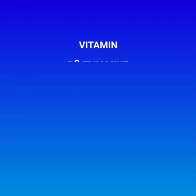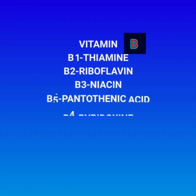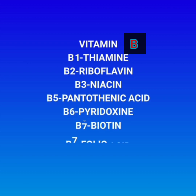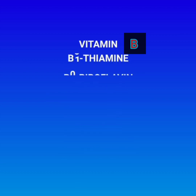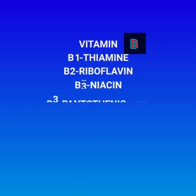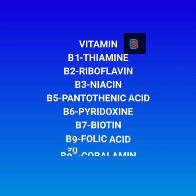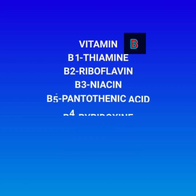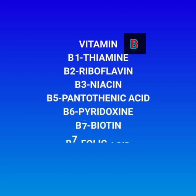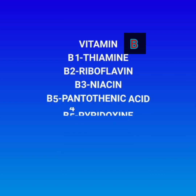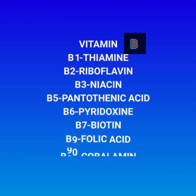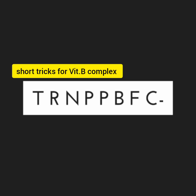The names of the B complex groups are: vitamin B1 is called thiamine or aneurine, B2 is riboflavin, B3 is niacin, B5 is pantothenic acid, B6 is pyridoxin, B7 is biotin, B9 is folic acid, and finally B12 is cobalamin.